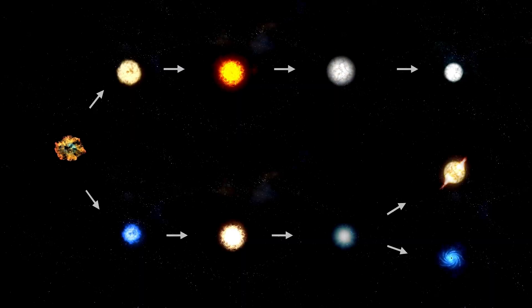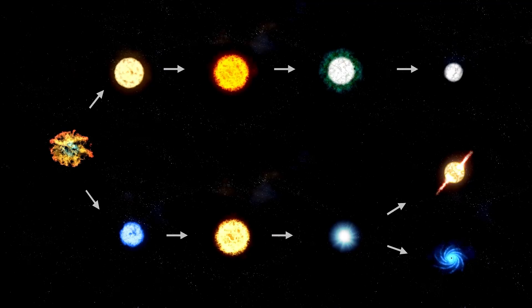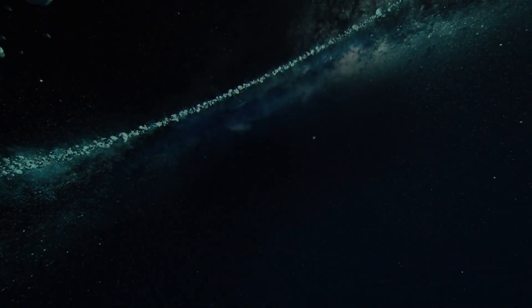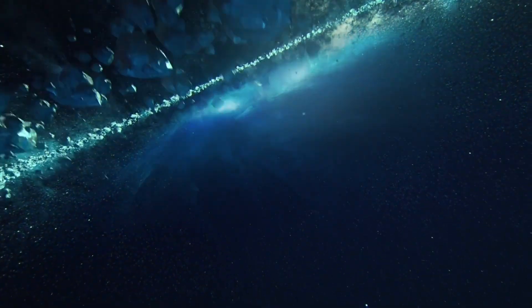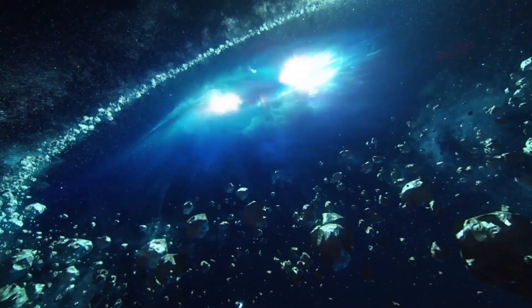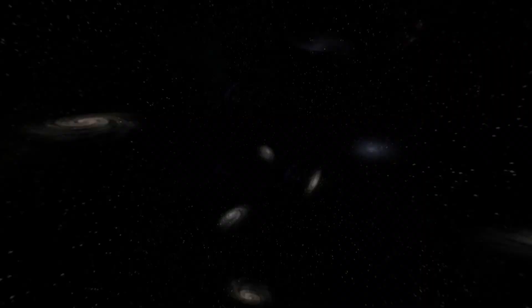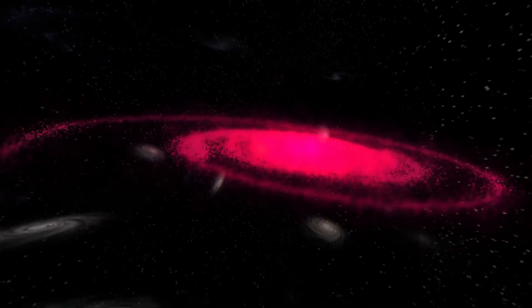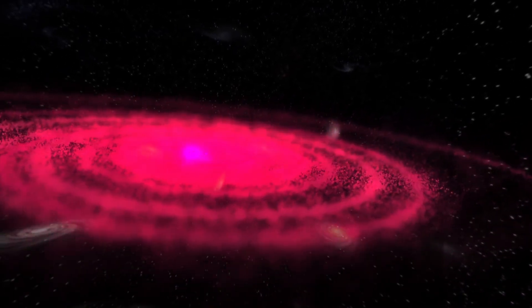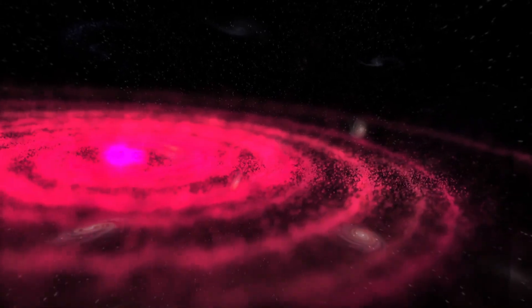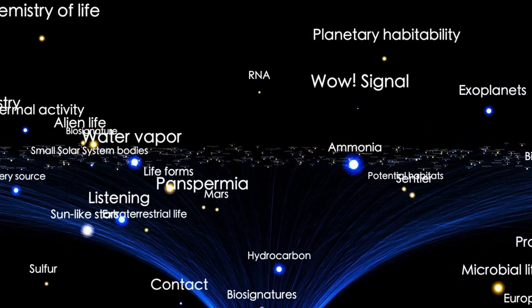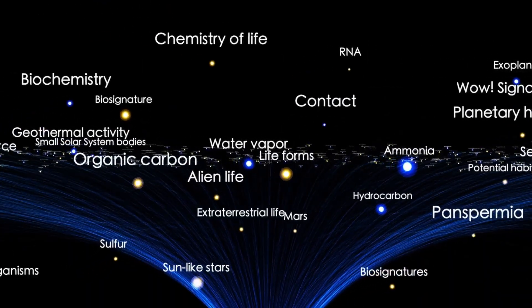Instead of fleeing toward interstellar space, 3i Atlas was now heading back toward the solar system, accelerating along a return course that no known physical law could produce. For NASA, the event triggered an immediate re-examination of every line of data. The reversal could not be explained by gravitational capture. The sun lacked the energy necessary to pull an object moving at that speed back into orbit. Nor could Jupiter or Saturn, massive as they are, have provided a slingshot powerful enough to redirect.